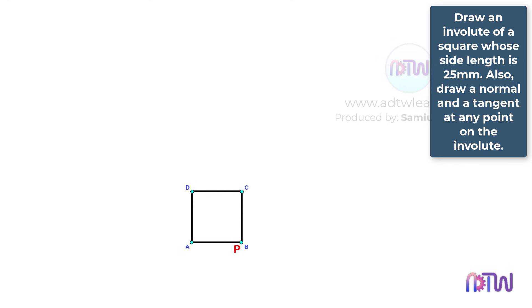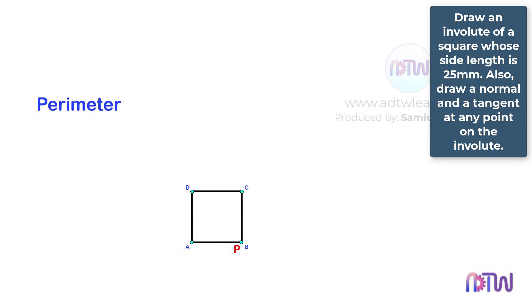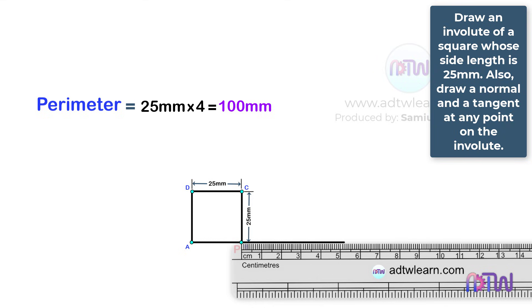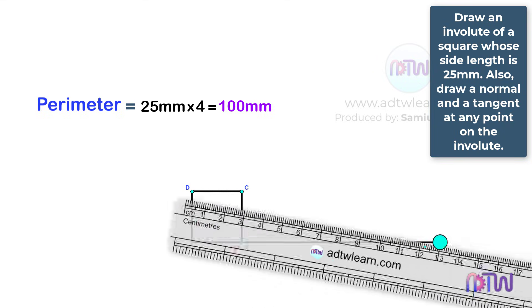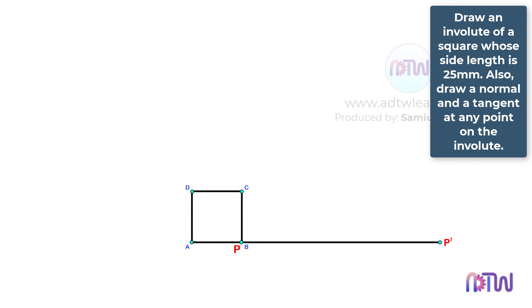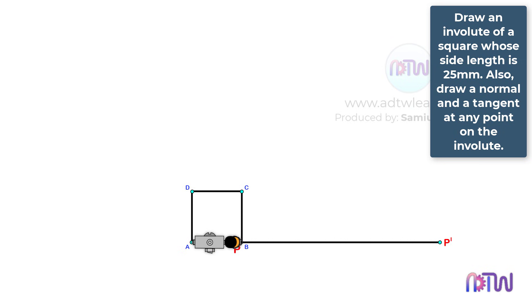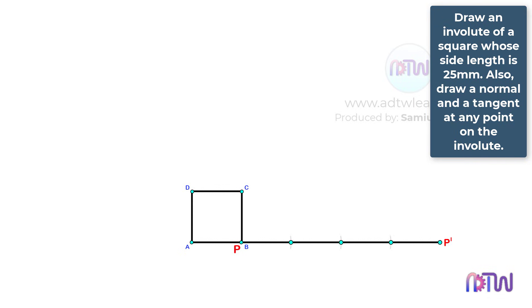We need to draw a line whose length should be equal to the perimeter of the square. The perimeter of the square is equal to 25 mm multiplied by the number of sides, which is 4, giving 100 mm. Draw a line of 100 mm and label this endpoint as P'. Then take a compass, adjust it to length AB, and cut arcs on this horizontal line. Label these points as 1, 2, 3, and 4.